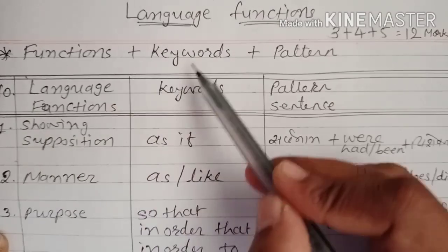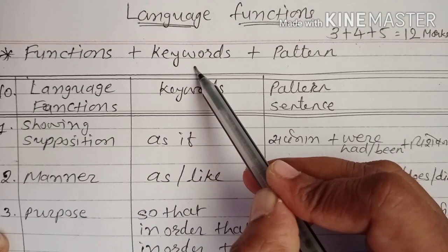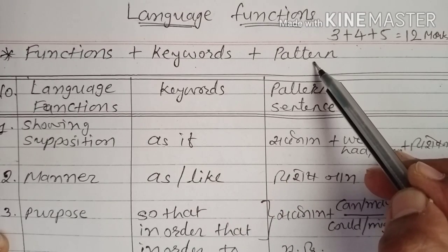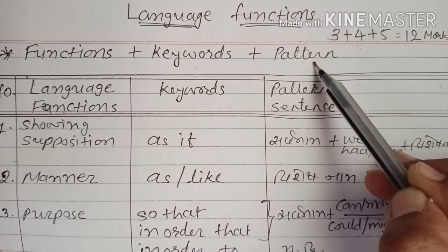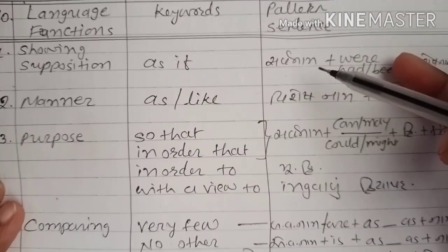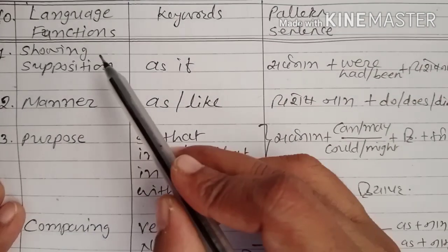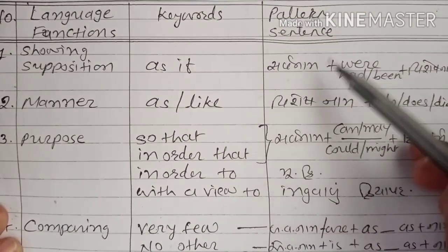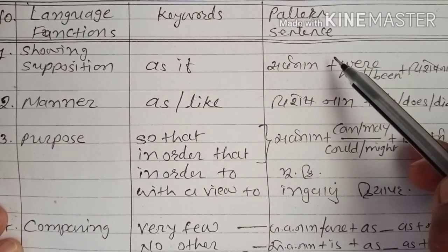To study language functions effectively, you need to remember: first, identify which function is being asked; second, find the keyword; and third, know which pattern sentence follows. Both of these together will help you answer. We have explained language functions in detail in our previous videos. Let's proceed with keywords and pattern sentences.